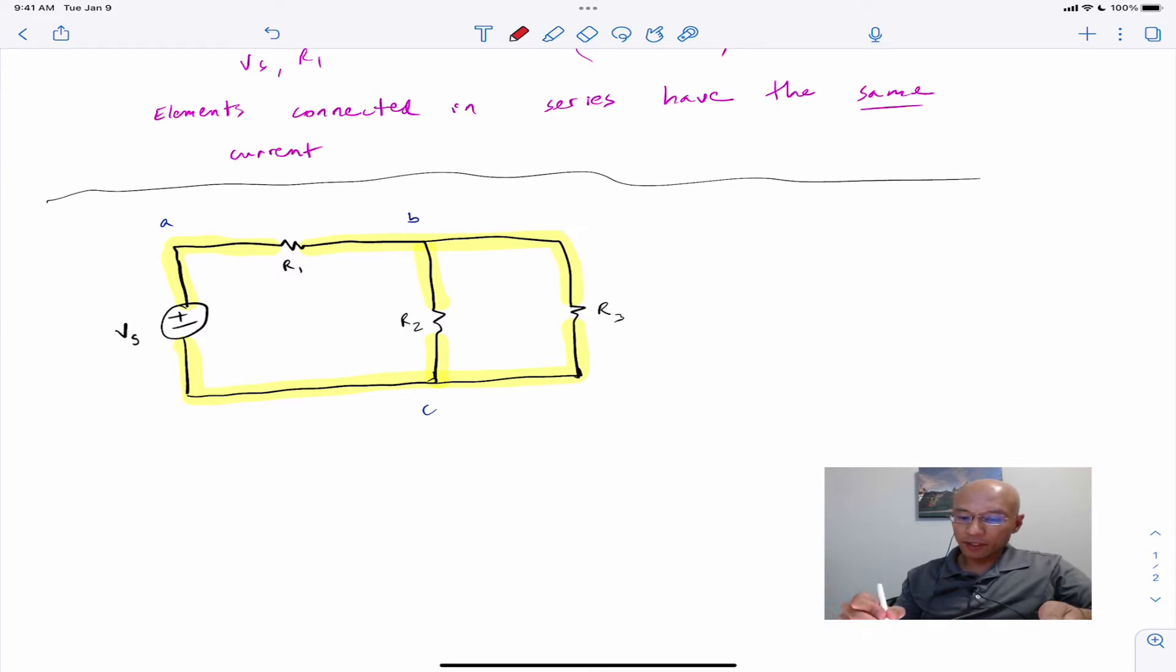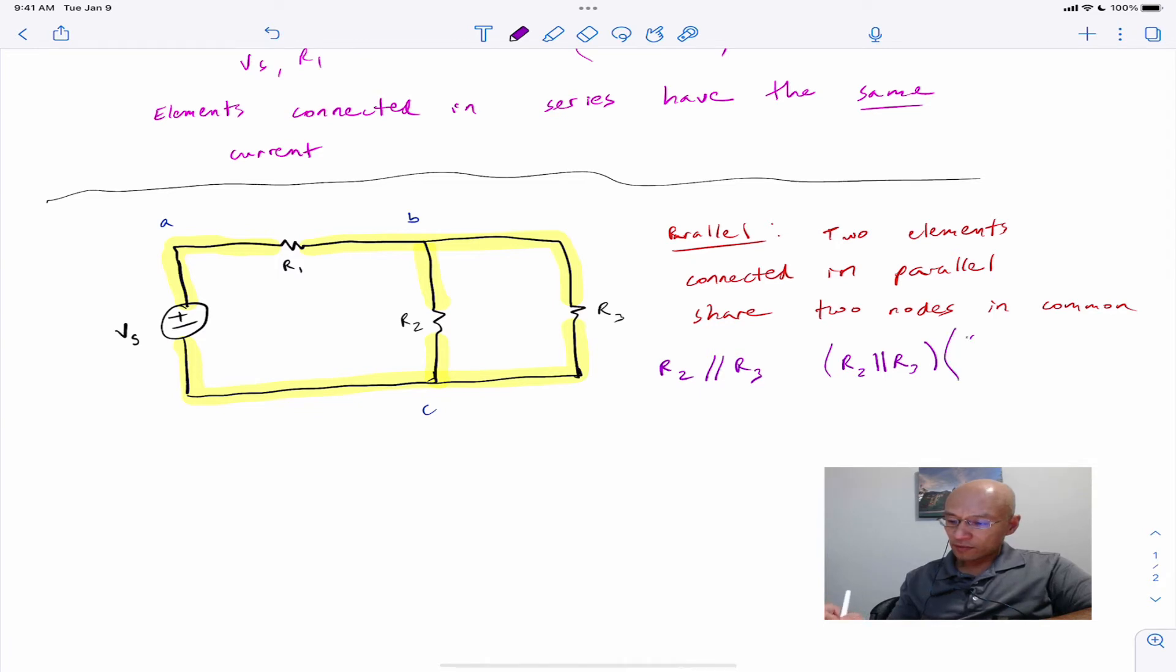The definition of elements connected in parallel is as follows. Two elements connected in parallel have two nodes in common. So the only elements that are connected in parallel here are R2 and R3. And we can write this in shorthand. So we put here slash slash R3. Or you could use the vertical bars, which are called pipes. So this is R2 is in parallel with R3. Why? Because they share nodes B and C in common.